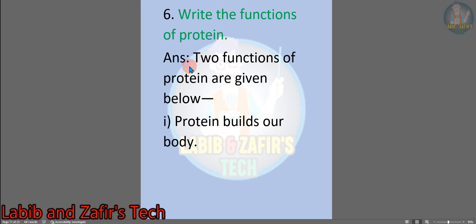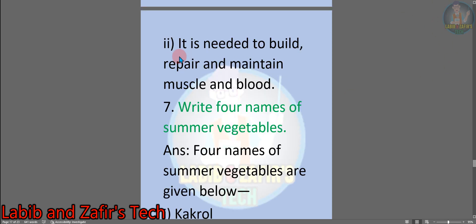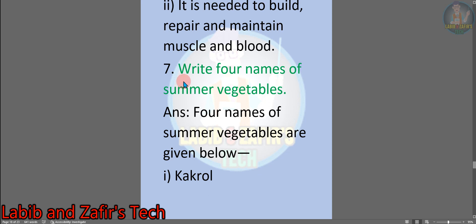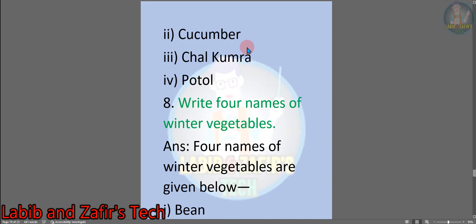Number 6: write the functions of protein. Answer: two functions of protein are given below. Number 1, protein builds our body. Number 2, it is needed to build, repair, and maintain muscle and blood. Number 7: write four names of summer vegetables. Answer: four names of summer vegetables are: number 1, cockerel; number 2, cucumber; number 3, chalkumra; number 4, bottle gourd.